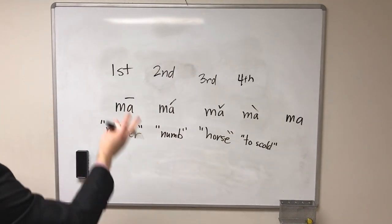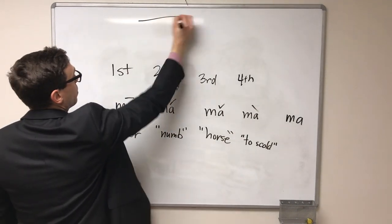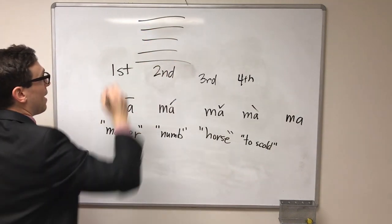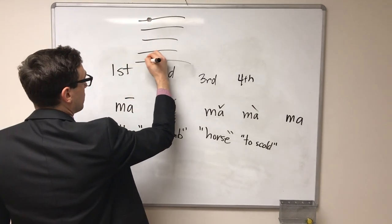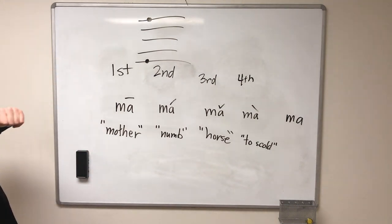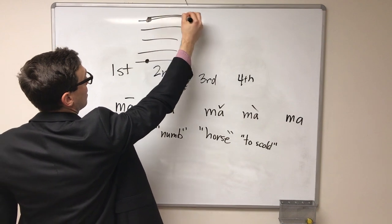Another good way to think about the four tones if you've ever studied music, musical notation before—something higher up here will be a higher pitch than if we had a note down here. You can think of your first tone as starting up here and staying up here.